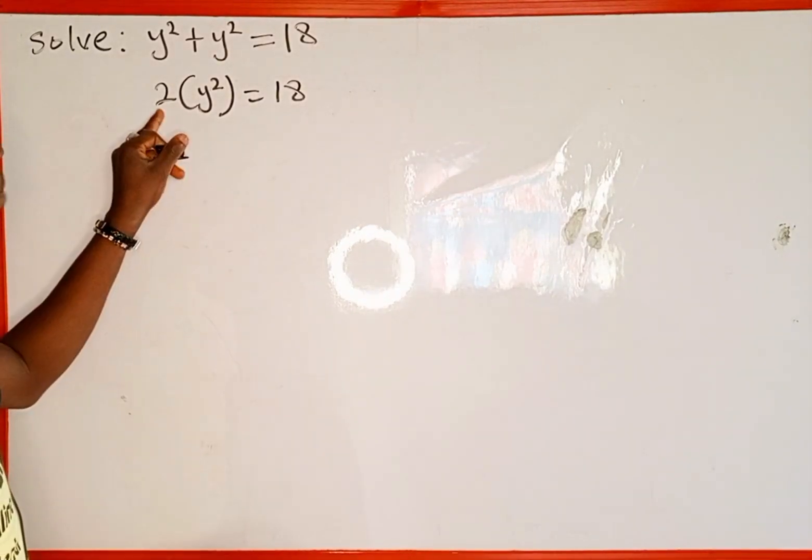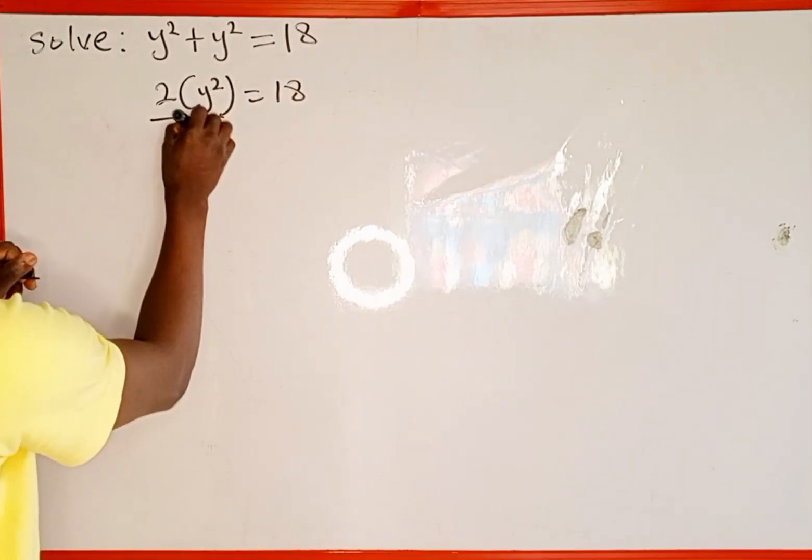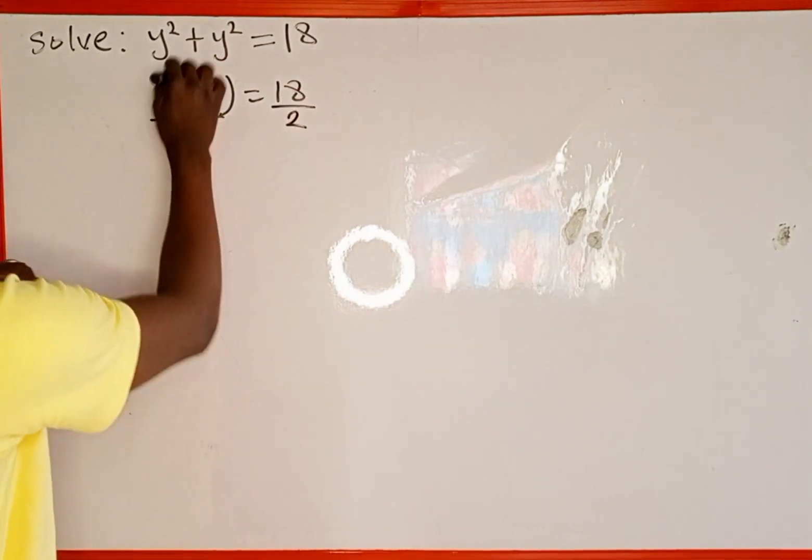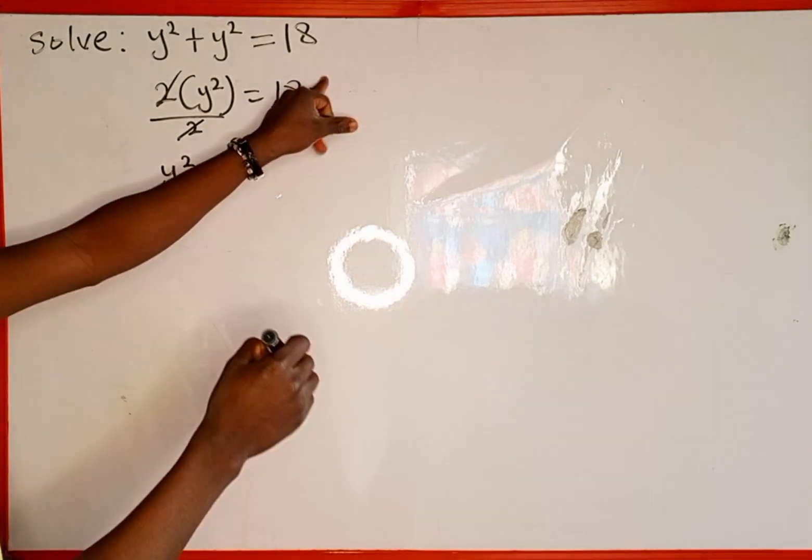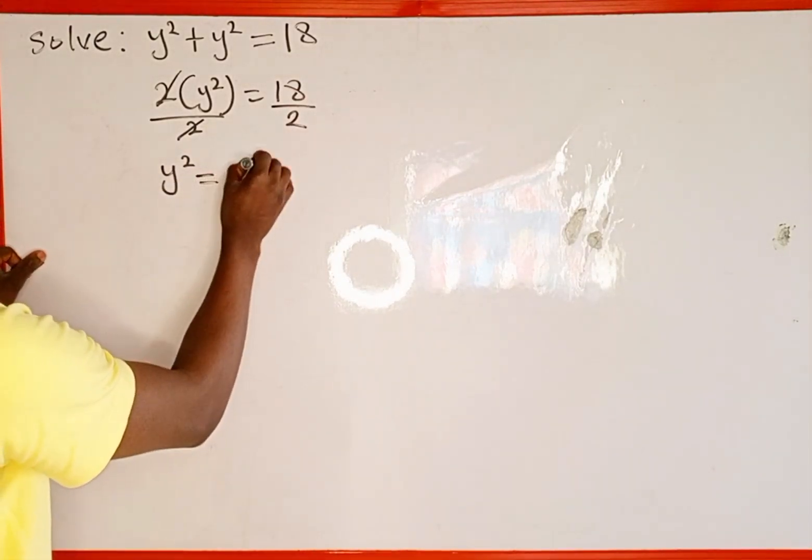The next thing we're going to do is divide both sides by 2. So we have 2 here and also 2 here. These 2 is going to cancel out these 2. y to power 2 is equal to 18 divided by 2 which gives us 9.